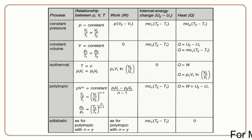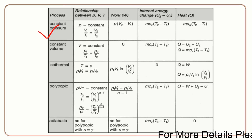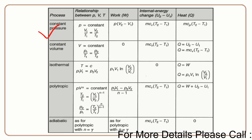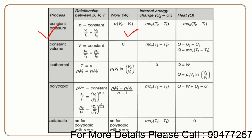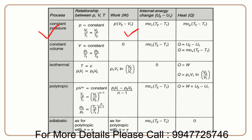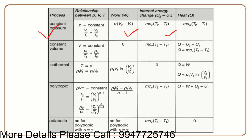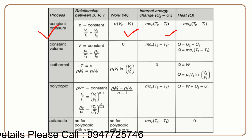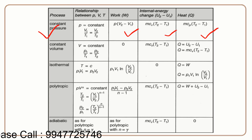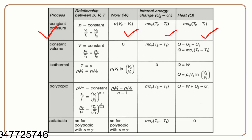Looking at different thermodynamic processes — work done, internal energy change, and heat transfer: for the constant pressure process, work done equals P times delta V, or P times (V2 minus V1); internal energy equals m·Cv·ΔT; heat equals m·Cp·ΔT. For the constant volume process, delta V is zero, so P times delta V equals zero — that is, work done is zero. Internal energy equals m·Cv·ΔT.